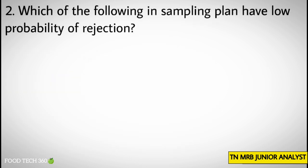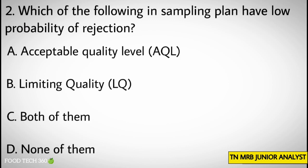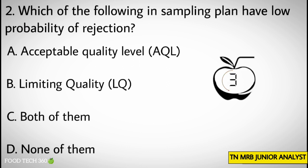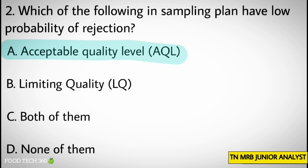Question number 2. Which of the following in a sampling plan has a low probability of rejection? Options: A. Acceptable quality level, B. Limiting quality, C. Both of them, D. None of them. Correct answer: A. AQL.